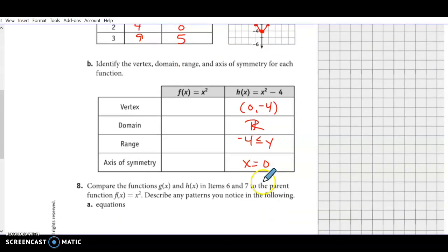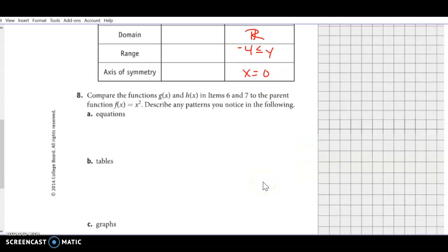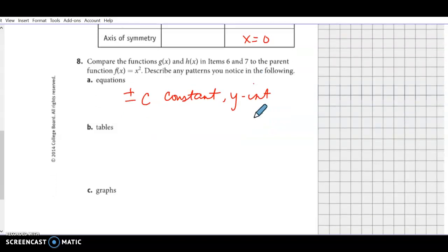So when we look at those, the patterns that we noticed, we should have noticed that we had a plus or minus, a c value, that constant, which is going to be our y-intercept. Our tables were the same. In our table, we added or subtracted that c. And then our graph went up or down, depending on what that c was.